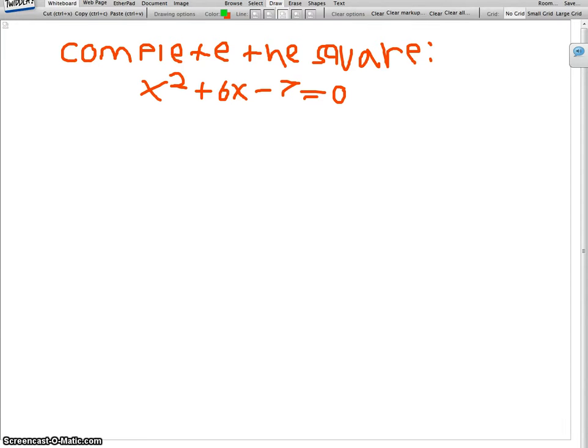Hi, my name is Victor, and I'm going to teach you how to complete the square of x squared plus 6x minus 7 equals 0. So the first thing you do is write down the problem like I just did.